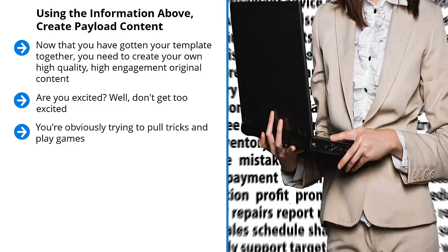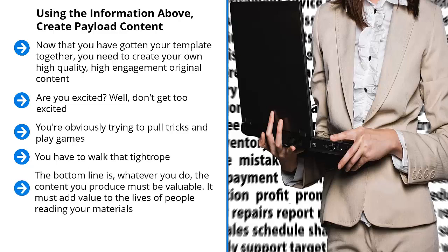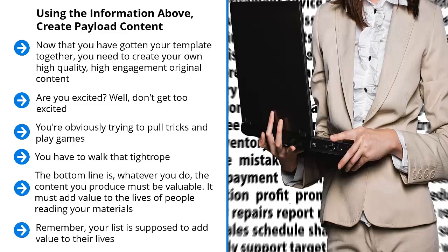Instead, the content must be informative. Think of it as an infomercial — you're selling something, but people have to walk away with solid value. You have to walk that tightrope between shoving stuff down people's throats and providing solid value without asking for anything in return. The bottom line is, whatever you do, the content you produce must be valuable. It must add value to the lives of people reading your materials. That's how you build credibility, and that's how you get people excited about your mailing list. Remember, your list is supposed to add value to their lives, and it will be very hard to give that impression when the content you share is worthless.